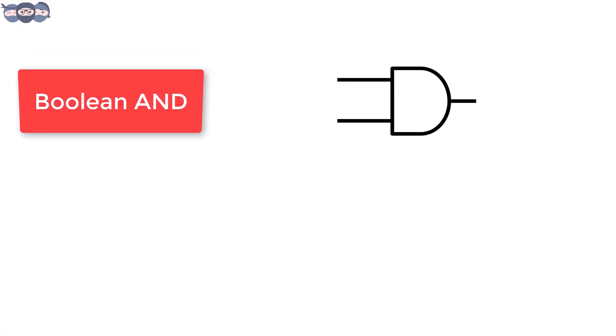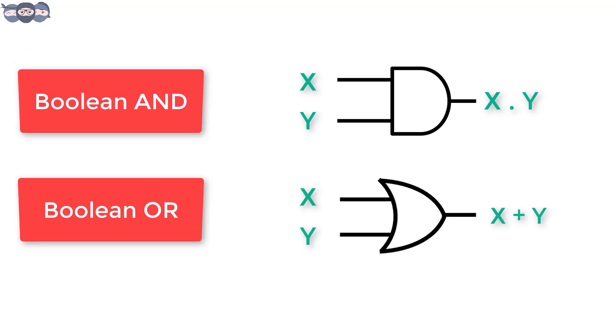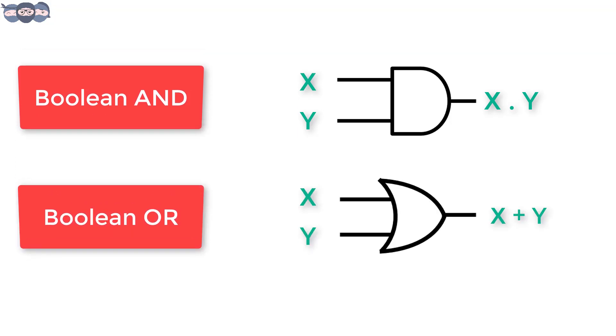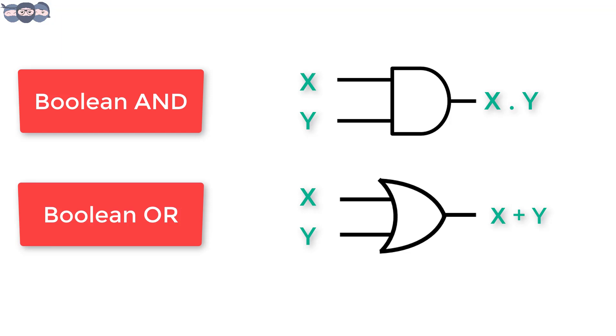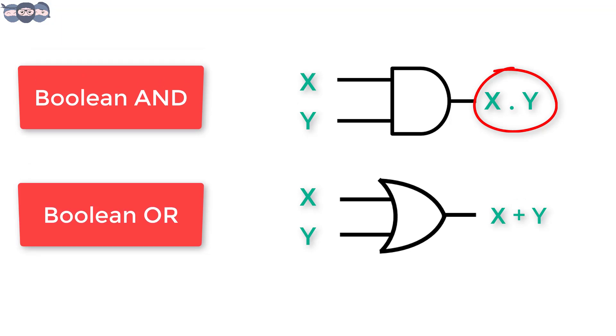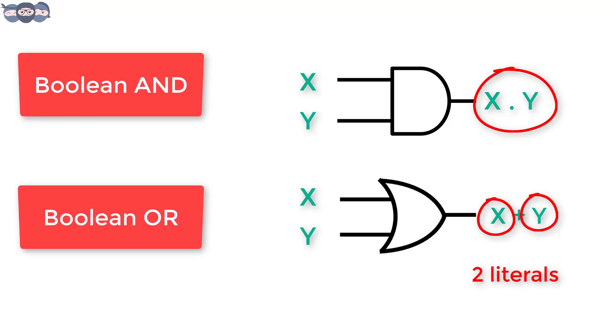In Boolean algebra, AND operation is signified by a dot. For this example, the expression is read as X AND Y. Boolean OR operation is noted by plus. It is read as X OR Y. It's very important that you pronounce them this way and not call them X into Y. In the above equation, X and Y are two literals.